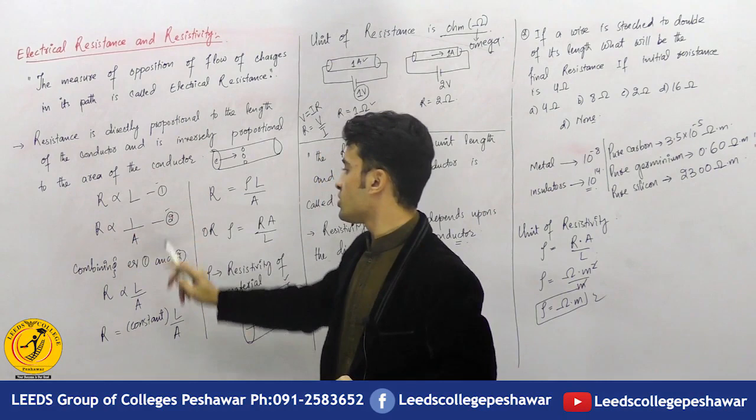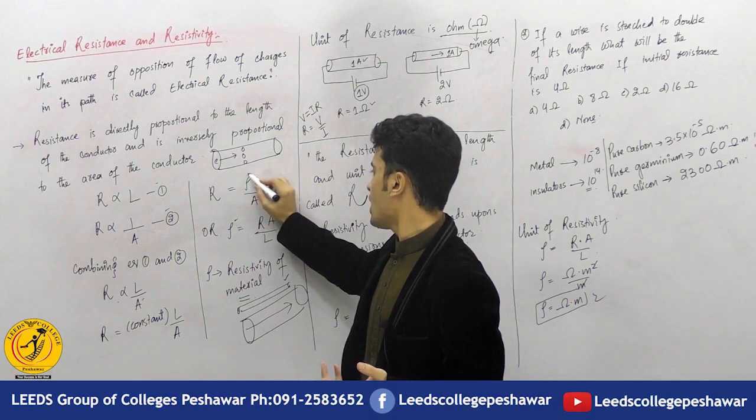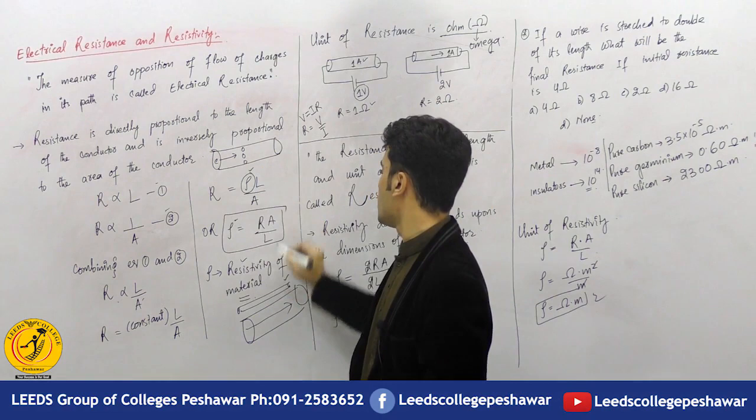Combining these two equations gives us a combined relation. To make it an equation, we introduce a constant. This constant is called the resistivity of the material. Resistivity can also be written in the form of: R = ρL/A, where ρ is resistivity.